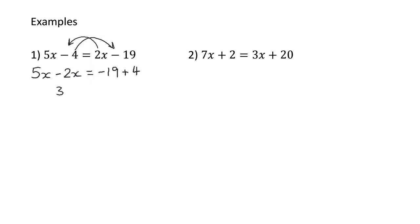Tidy it up: I've got 3x equals negative 15. If I'm solving an equation, think of it like changing the subject — I want x on its own. Currently I've got 3x equals negative 15. The 3 is going to come over; on the left-hand side it's multiplying, so when it comes over it's going to be dividing. So x is going to be negative 5.